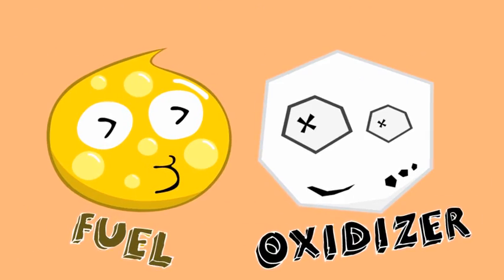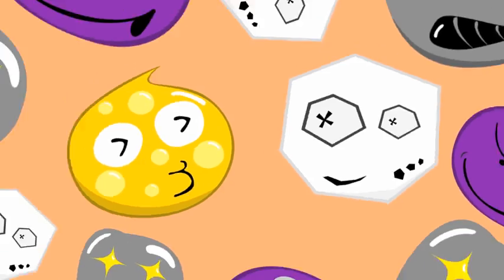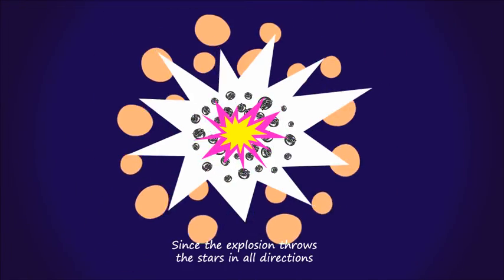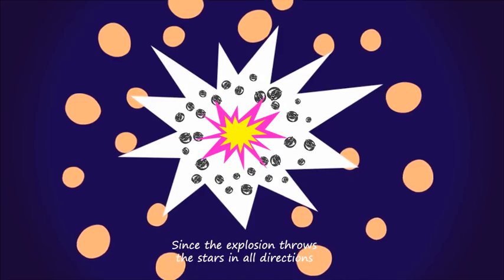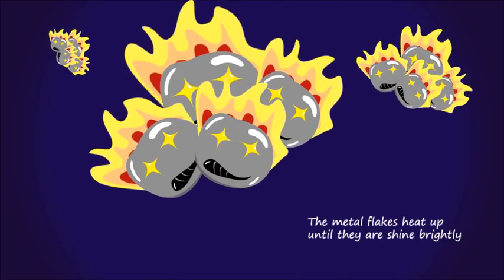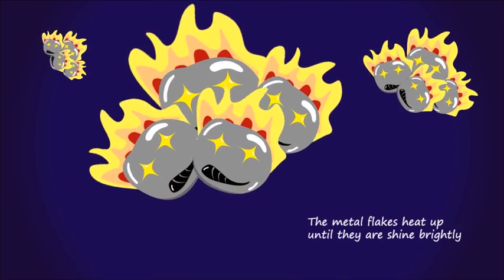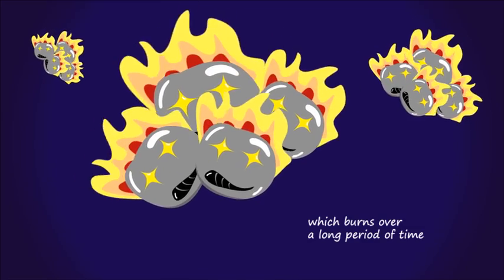The fuel and oxidizer are well proportioned along with the other chemicals. Since the explosion flows the stars in all directions, the metal flakes heat up until they shine brightly, which burns over a long period of time.